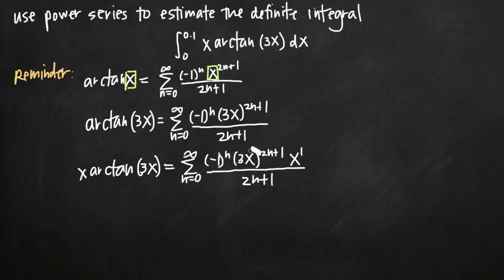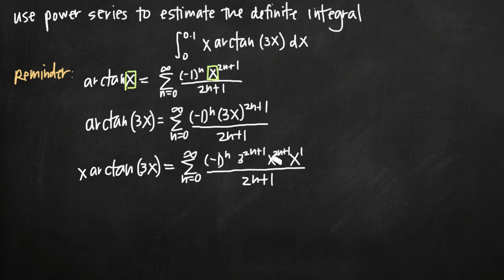The quantity 3x raised to the 2n plus 1 can be separated into two separate terms: 3 to the 2n plus 1 times x to the 2n plus 1. Now we have x to the 2n plus 1 times x to the first power. When you have terms multiplied together with like bases, you add the exponents — 2n plus 1 plus 1 is 2n plus 2. So we're left with x to the 2n plus 2 as the exponent, giving us a simplified power series representation for x·arctan(3x).